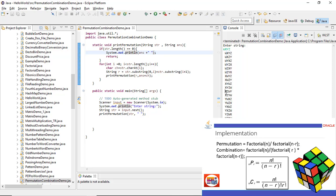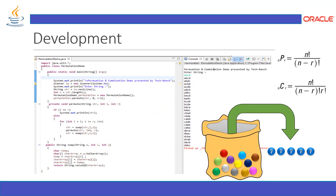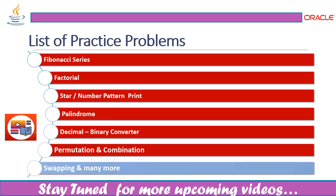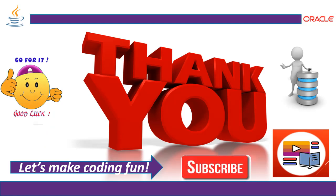This is the permutation and combination implementation using simple if, for loops, and string methods in Java. This is all about the implementation of permutation and combination using control statements. Next we are going to cover swapping and prime numbers. If you have any queries or questions, feel free to post a comment or contact us at techranch2019@gmail.com. Stay tuned for more upcoming videos — let's make coding fun, thank you!